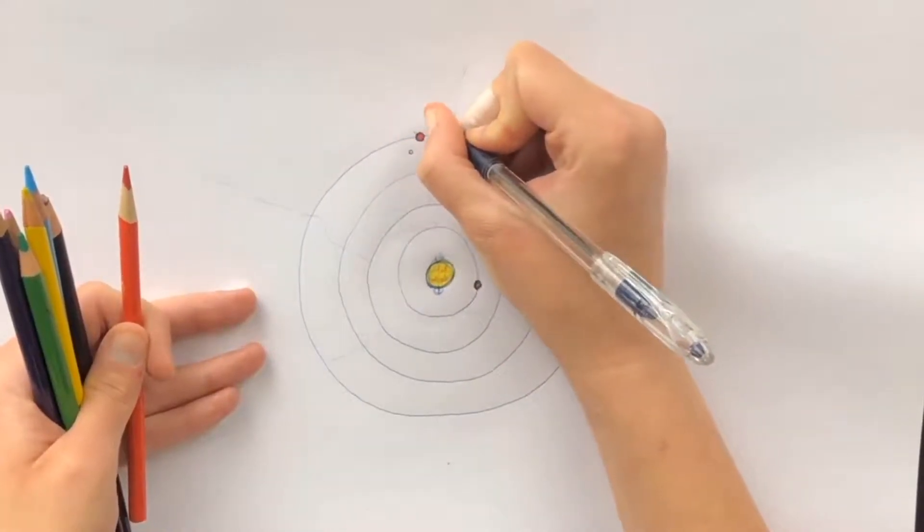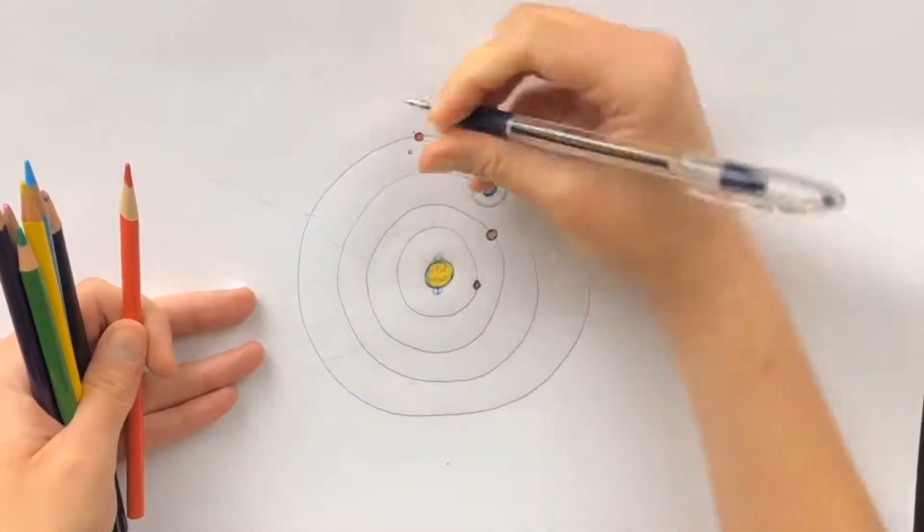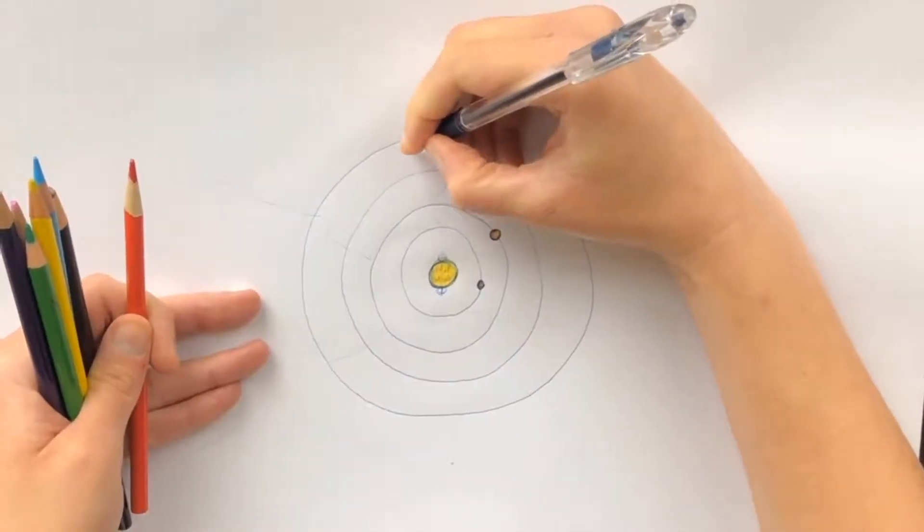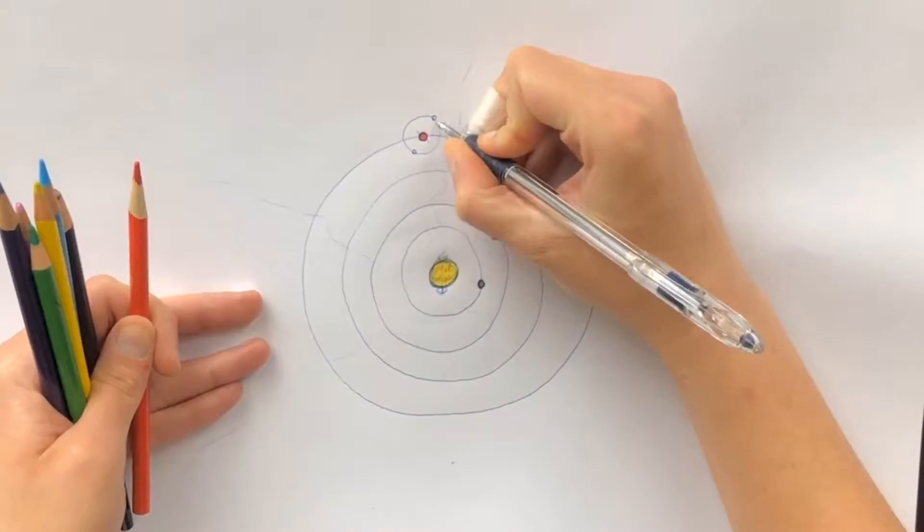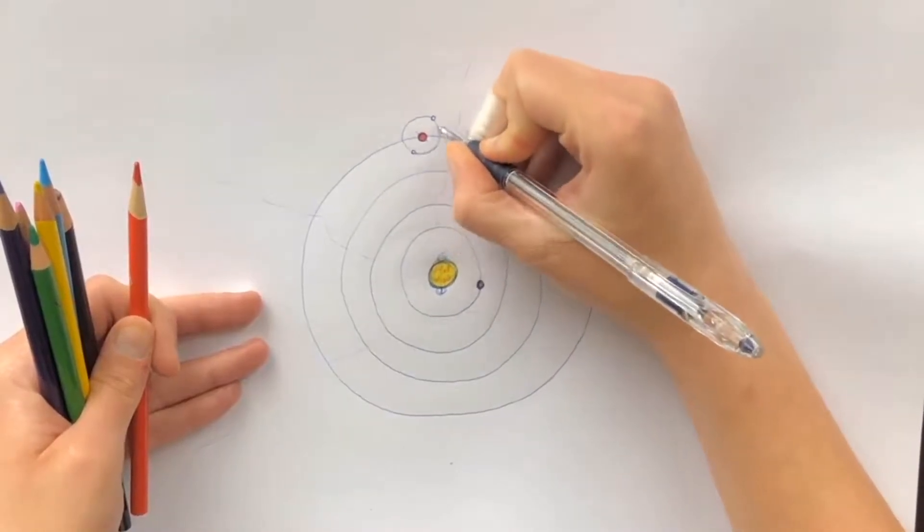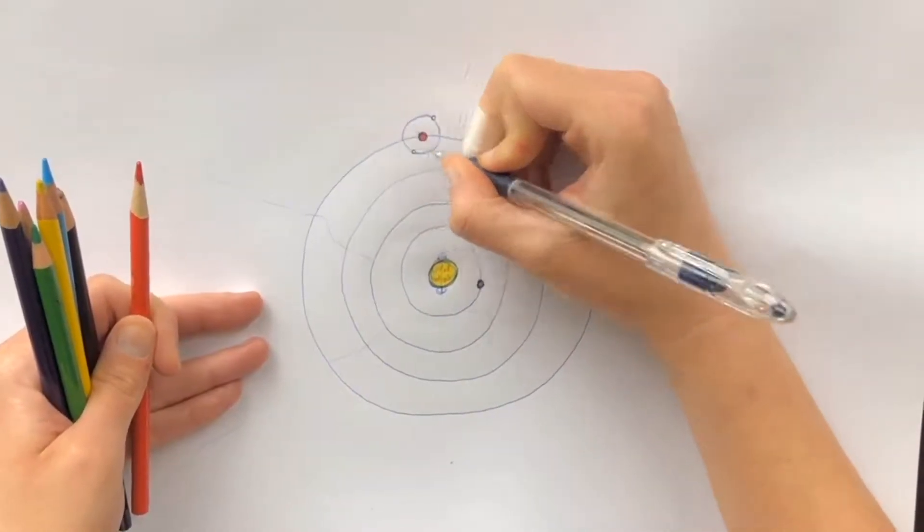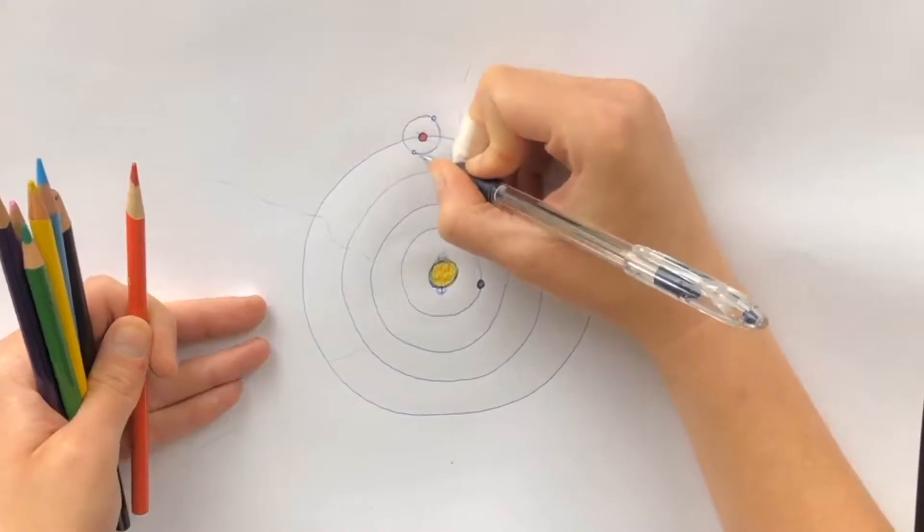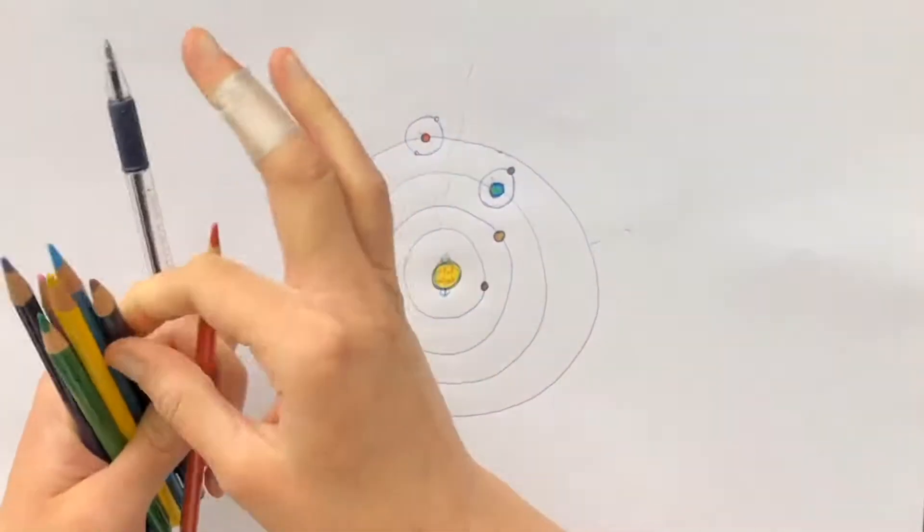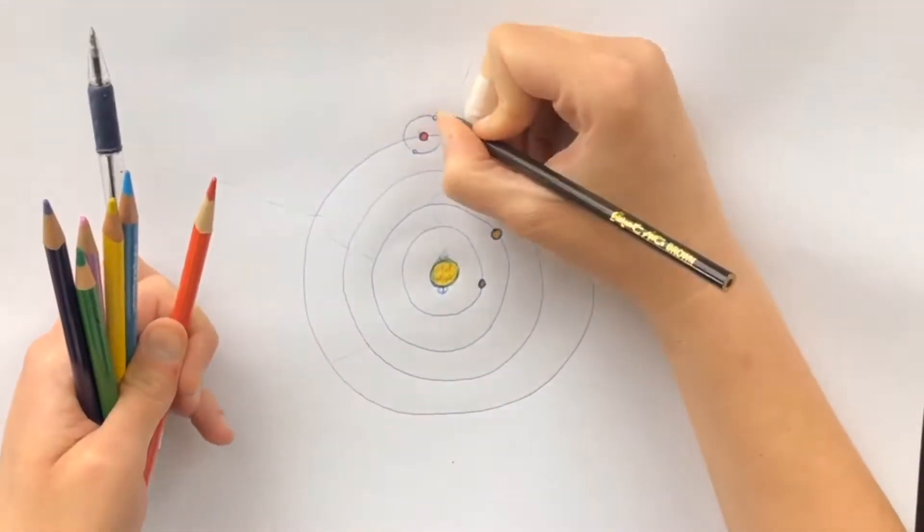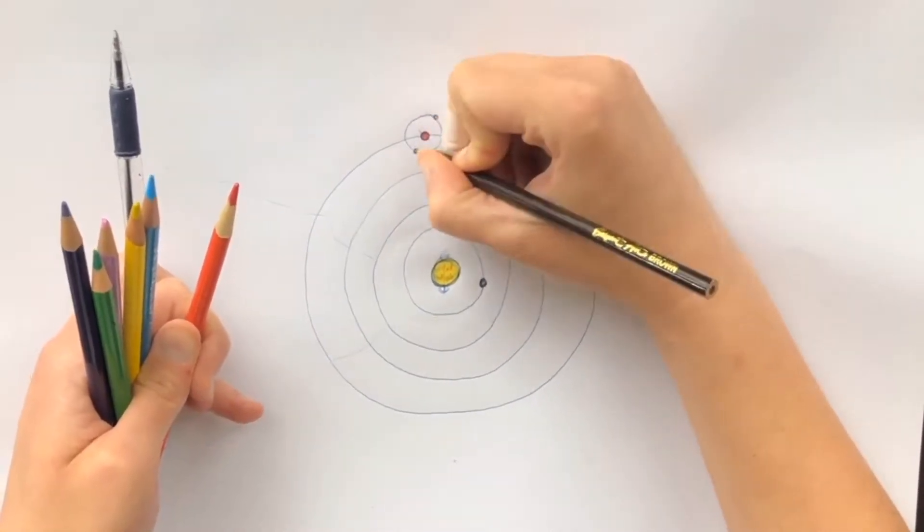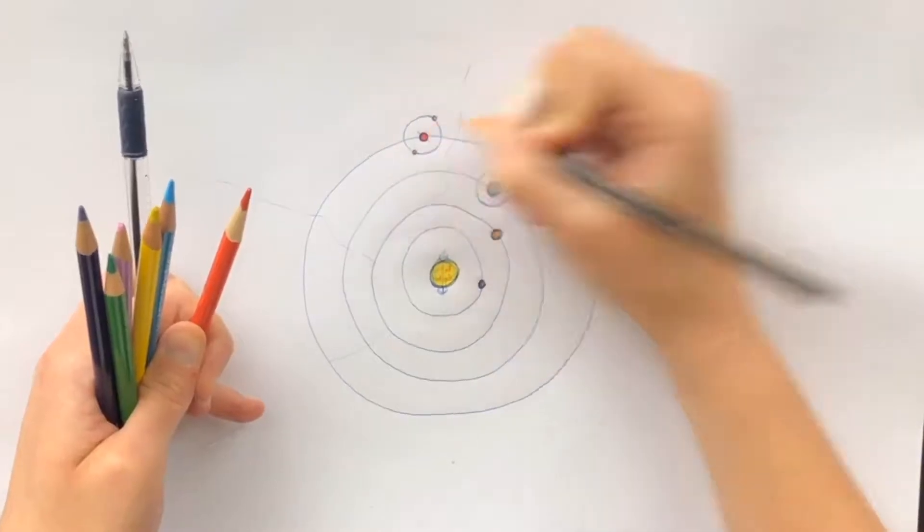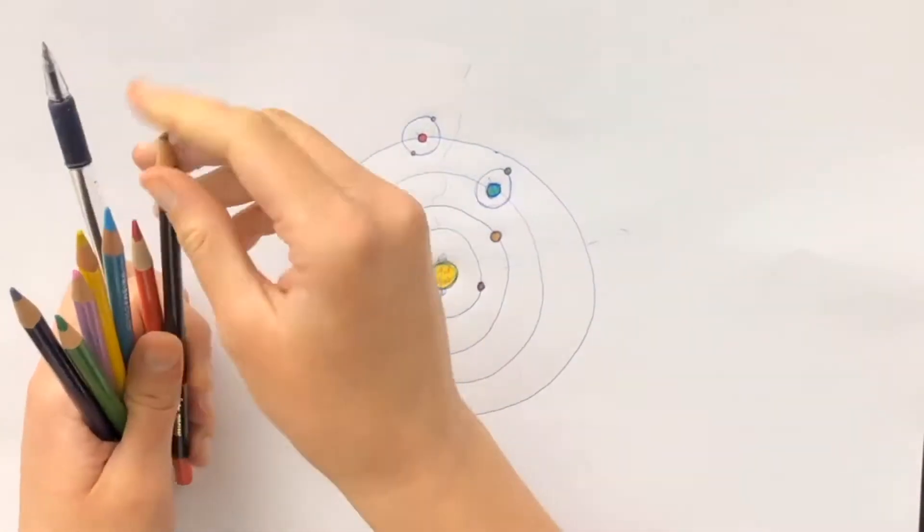And I don't think that they orbit exactly opposite from each other, but that's okay because we're just coloring for fun. So there we go, two little moons orbiting around Mars, the fourth planet from the Sun.